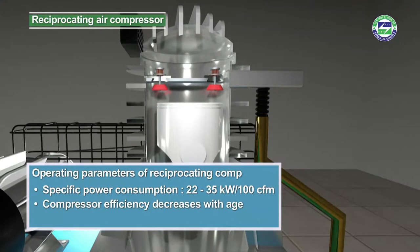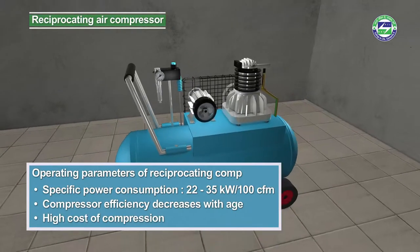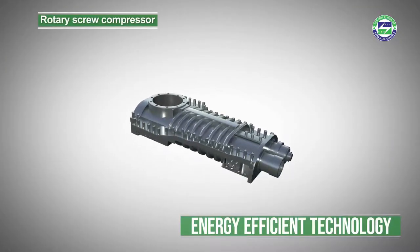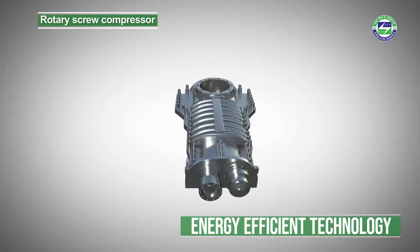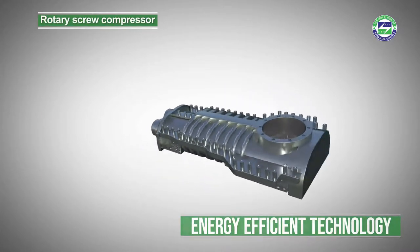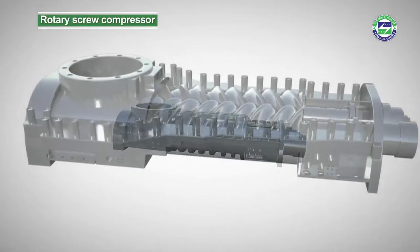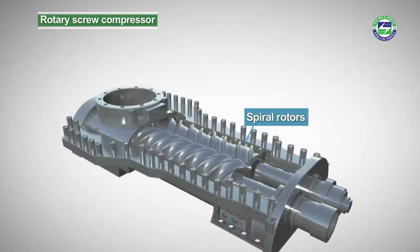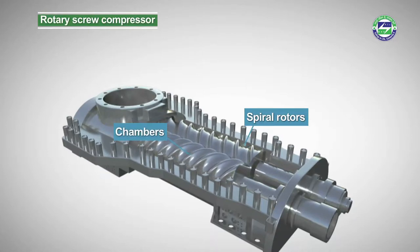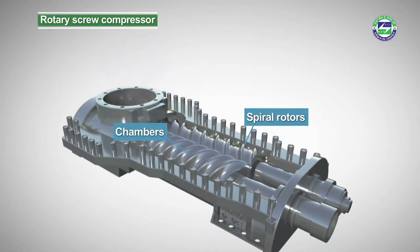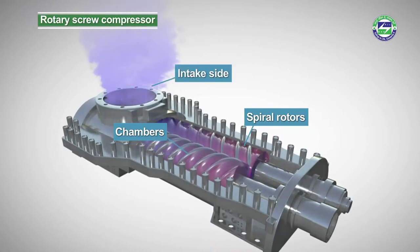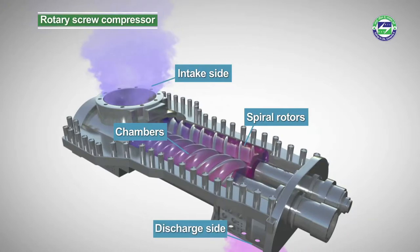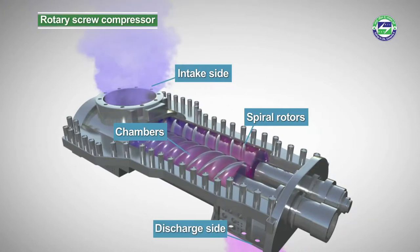These compressors produce a lot of noise with a relatively high cost of compression. Operational efficiency varies, ranging from 22 to 35 kilowatt per hundred CFM, and this goes down as the age of the equipment increases. Energy-efficient rotary screw compressors function on the basic principle of a positive displacement machine, in which the key elements are a pair of spiral rotors. During operation, the rotors turn and the spiral keys mesh together, forming chambers between the rotors and the casing wall.